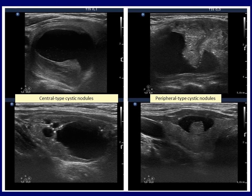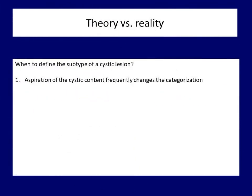Grouping of cystic nodules and lesions seems straightforward; however, in everyday practice, we face a problem. In most cystic nodules, we perform aspiration, and the presentation of the nodule frequently changes after aspiration of the fluid. It can affect both the subtype of the nodule and the echogenicity of the solid part, and may even impact the borders of the nodule.